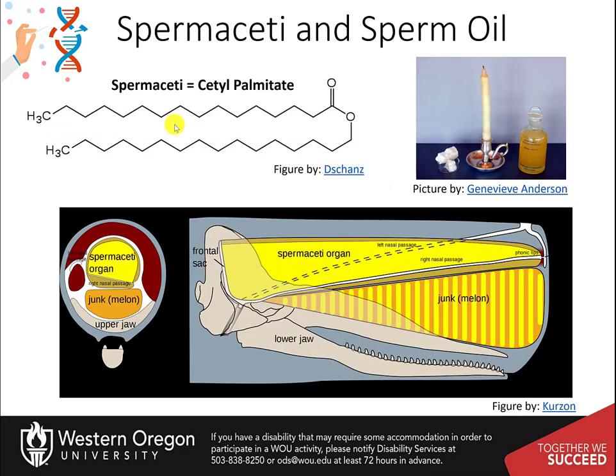Spermaceti is a waxy substance found in the head cavities of the sperm whale and in smaller quantities in the oils of other whales. It is created in the spermaceti organ inside the whale's head, which may contain as much as 1,900 liters or 500 US gallons of spermaceti. The spermaceti is thought to play a biological role in echolocation for the whales.